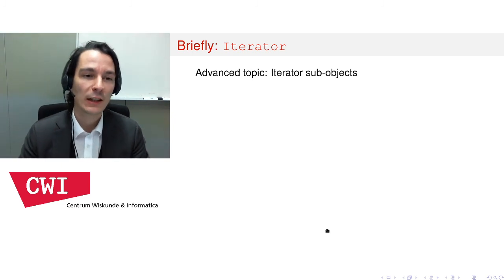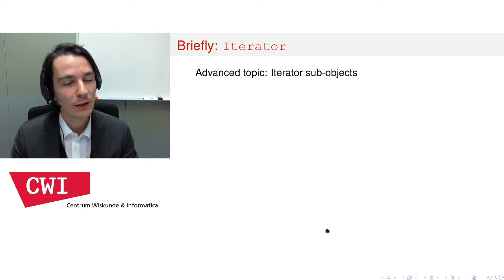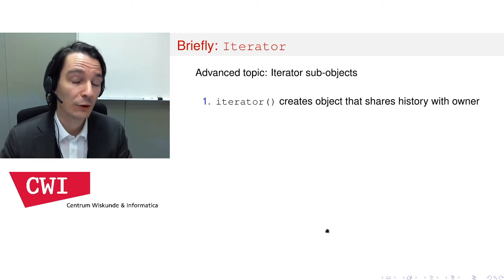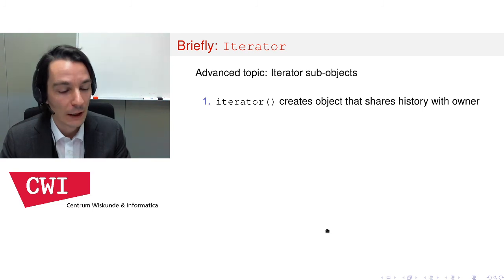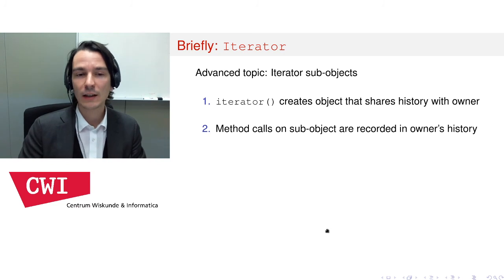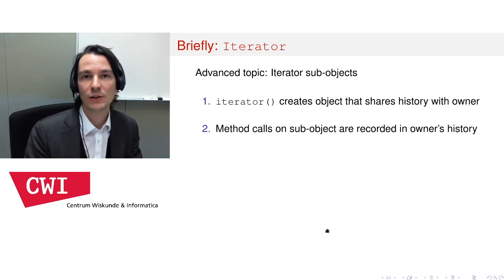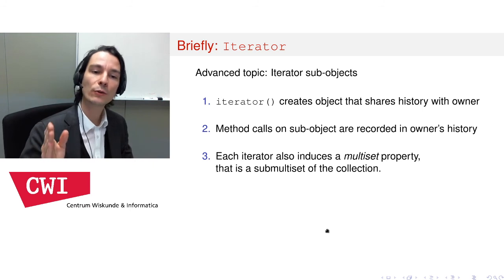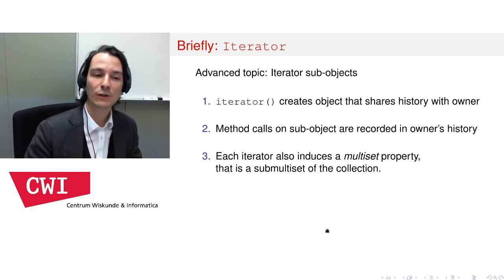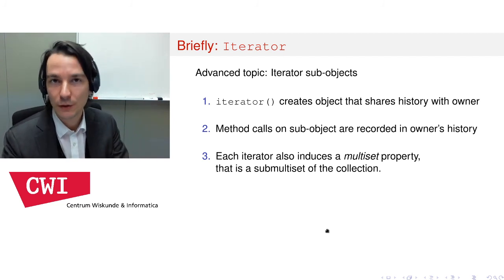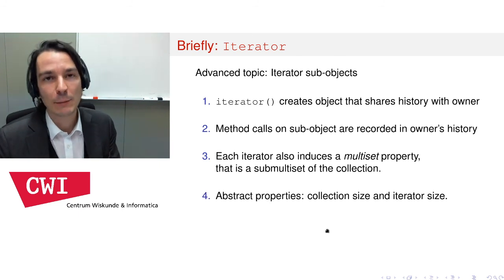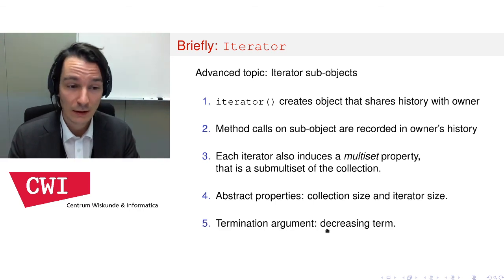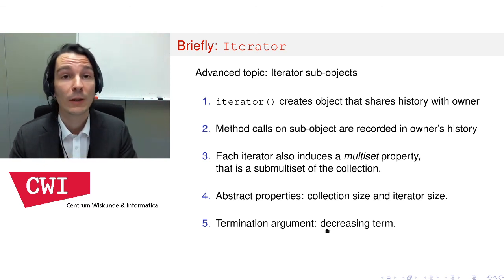Iterators are an advanced topic involving sub-objects. A sub-object shares its history with its owner. Iterators allow you to iterate over collections, and they share their history with the collection they come from. When you call methods on an iterator, those calls are not recorded in a separate iterator history but in the history of the collection. We can define a multiset property for the iterator — representing the visited elements so far — which must be a sub-multiset of the collection. Abstract properties such as collection size and iterator size, defined as sums of multiplicities, provide a decreasing term to complete the termination argument.